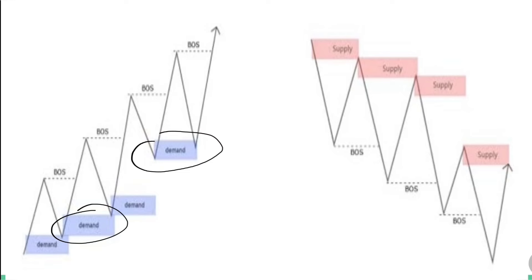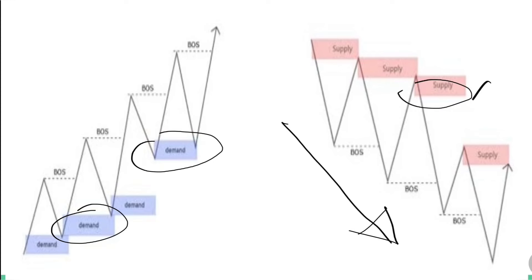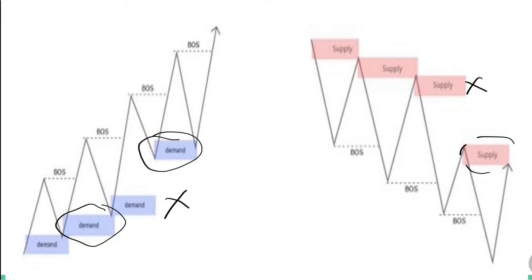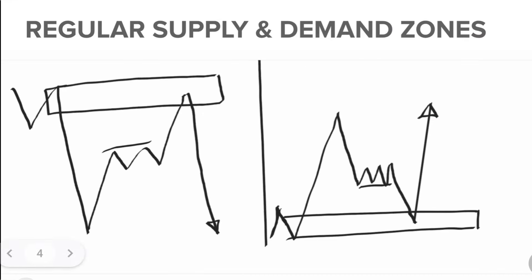For a supply zone in a bearish market structure, you trade from supply zones — what some traders call bearish order blocks. You can see this is an unmitigated supply zone, and this is a mitigated supply zone. Similarly with demand zones: here is a mitigated demand zone, and this one was not mitigated. That is basically what demand and supply traders or smart money traders do — and this is one way I make income from the forex market.